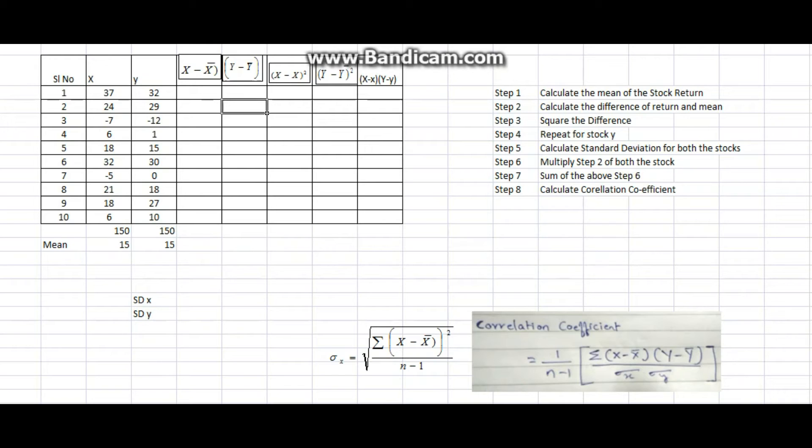Now I have to calculate X minus X bar. Mean would be called as X bar, so I'm going to put the number as 15 because that has been constant, and I'm going to drag them so I get all the numbers for difference for stock X. Similarly, the difference is again 15 for stock Y.